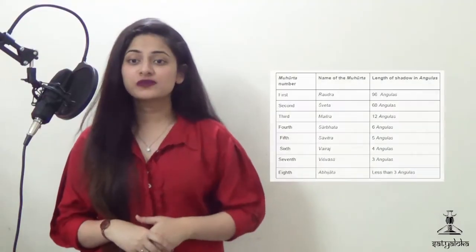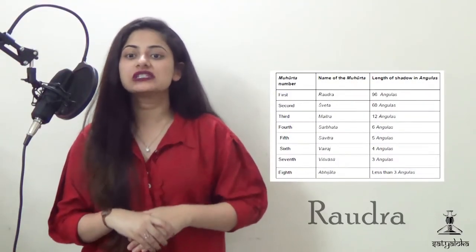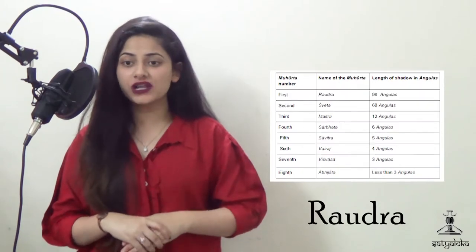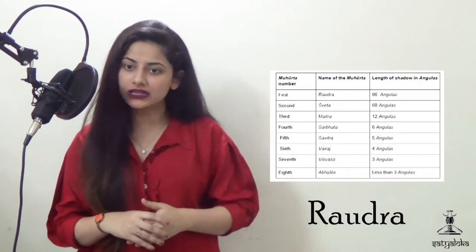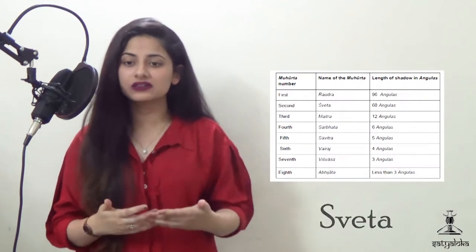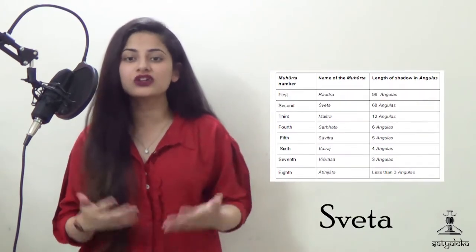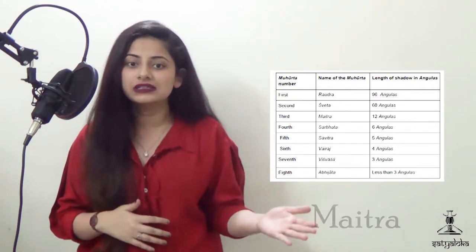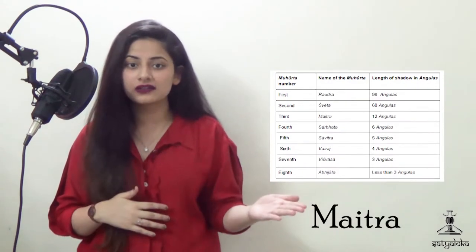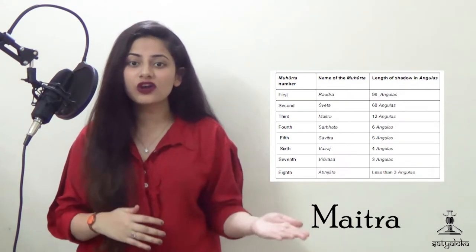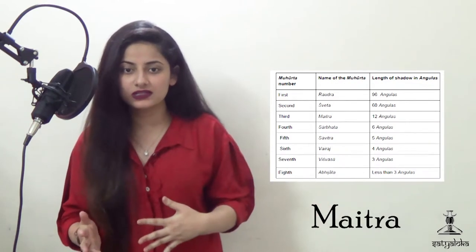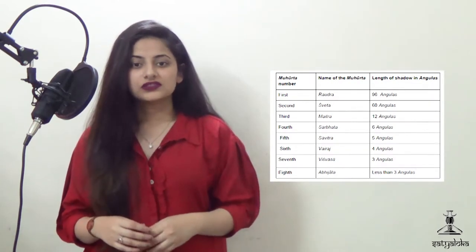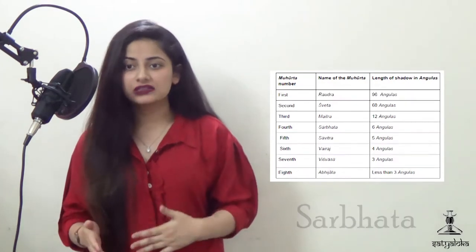The first Muhurta is the Raudra, which is 96 angulas of shadow length. The second is Shweta when the length of the shadow is 60 angulas. The third is Maitra when the length of the shadow is 12 angulas. The fourth is Sarbhat with 6 angulas shadow length.